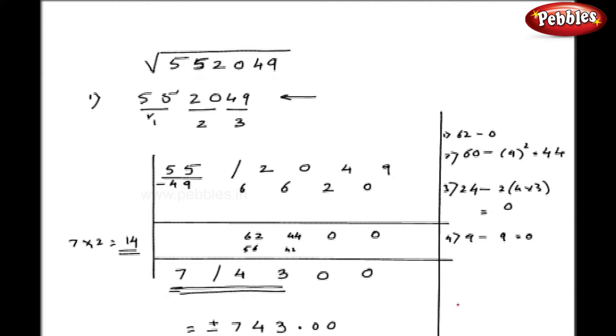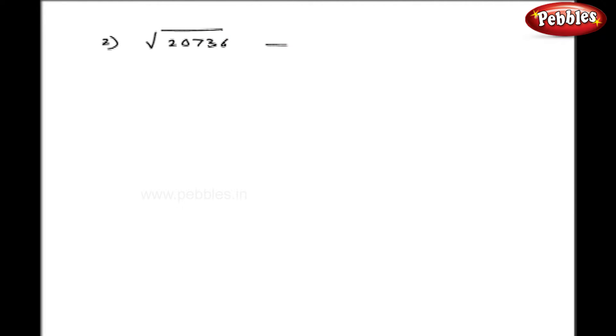This is a very easy method in Vedic mathematics; otherwise you would have to do large calculations to find the square root of such large numbers. Now let us consider one more example: the square root of 20736. Let us make pairs — the first pair, the second pair, and in the third pair only one digit.